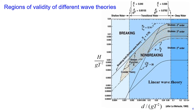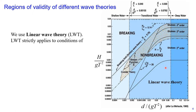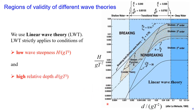On this slide, I show you an example of a graph that shows regions of validity of different wave theories. On this graph, we see linear wave theory and also non-linear wave series — higher order non-linear wave series such as Stokes second order, third order, and fourth order wave series. Depending on combination of wave steepness and relative depth, you choose the theory applicable for your conditions. As you can see from this graph, linear wave theory applies to low wave steepness and high relative depth.